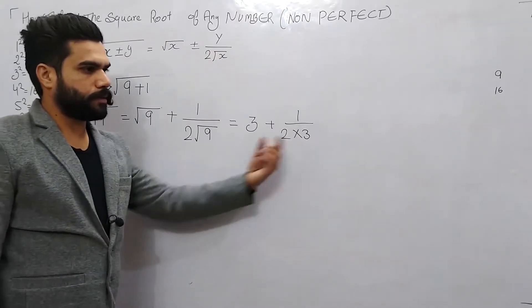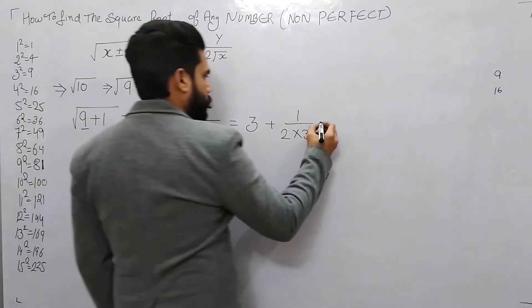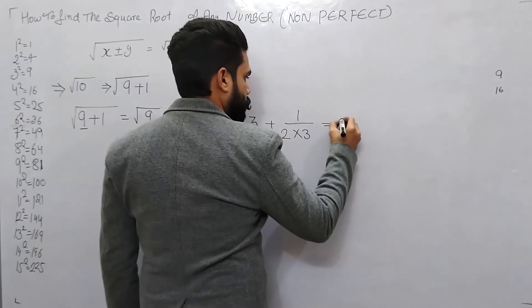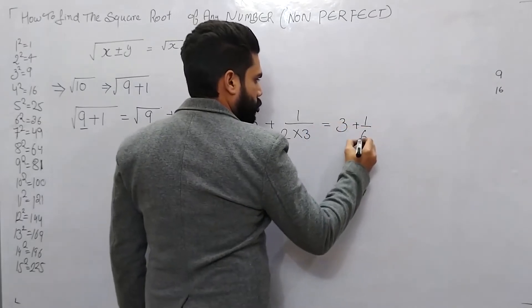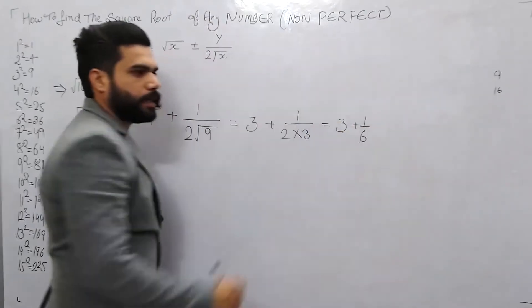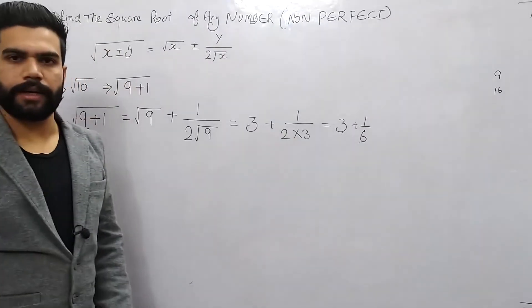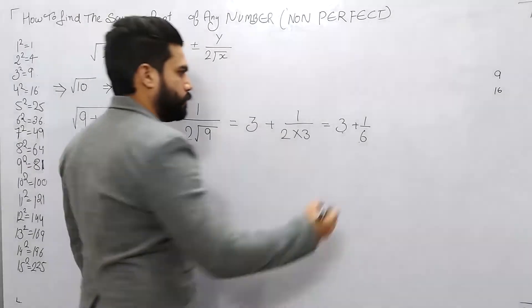So the denominator is 2 times 3, which is 6. Then we multiply to get 18. The result gives us our answer for root 10.